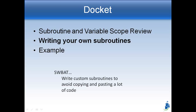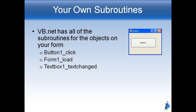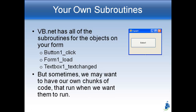Now we're going to learn how to make our own subroutines — this is the meat of today's lesson. In Visual Basic .NET, all the subroutines for objects on your form already exist. For example, Button1_Click when you click the button, or Form1_Load when the form initially loads. But we also have the ability to write our own chunks of code that we can make run whenever we want, rather than just the subroutines provided by Visual Basic.